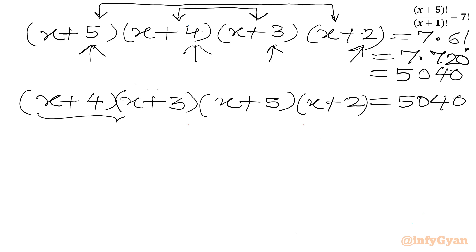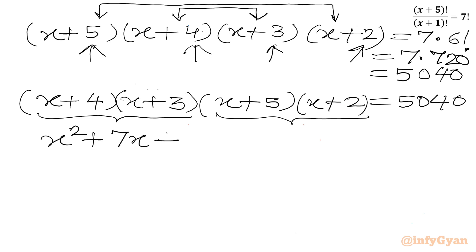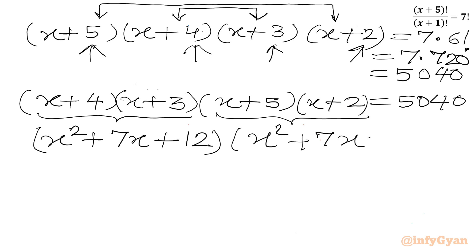Let us multiply each pair of brackets. For the first pair: x² + 4x + 3x + 12 = x² + 7x + 12. For the second pair: x² + 5x + 2x + 10 = x² + 7x + 10. So we have (x² + 7x + 12)(x² + 7x + 10) equal to 5040.